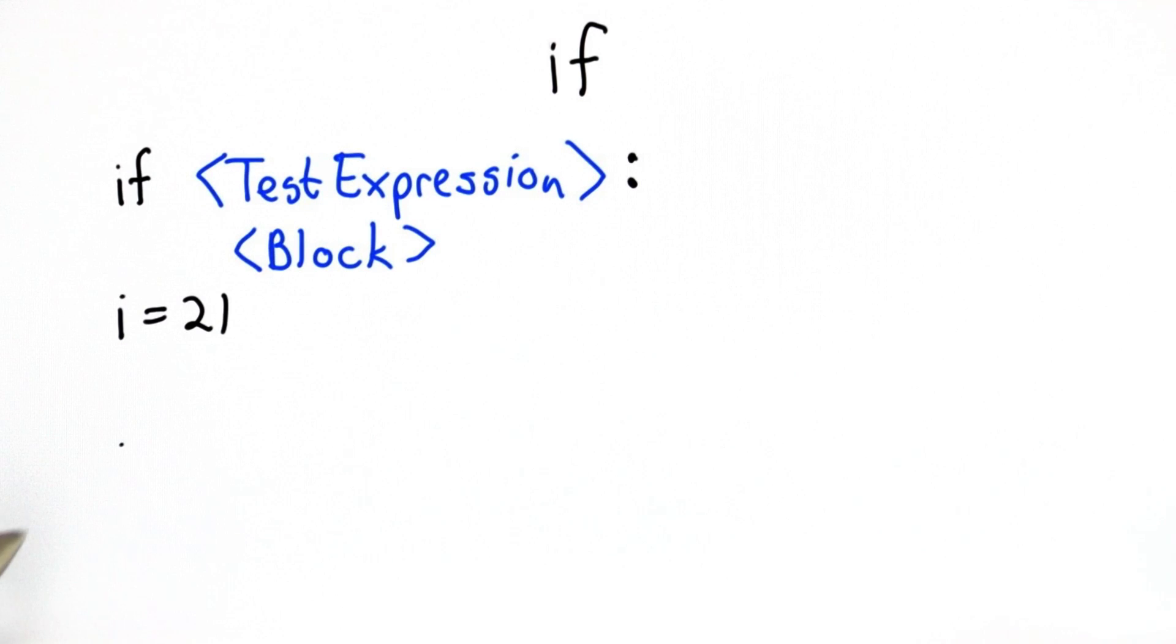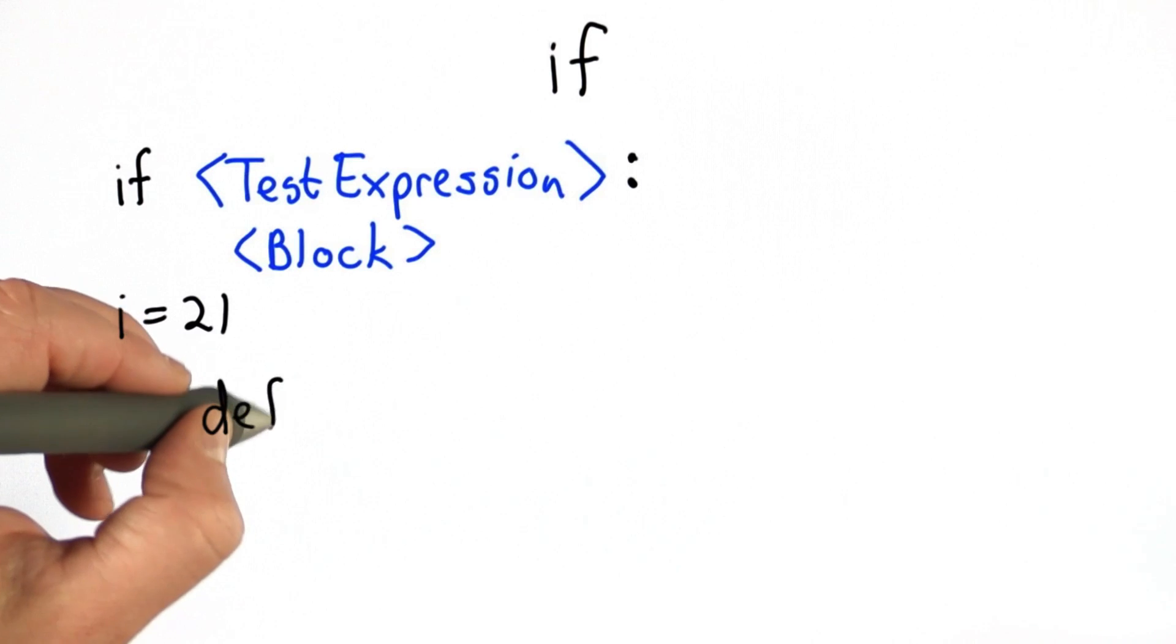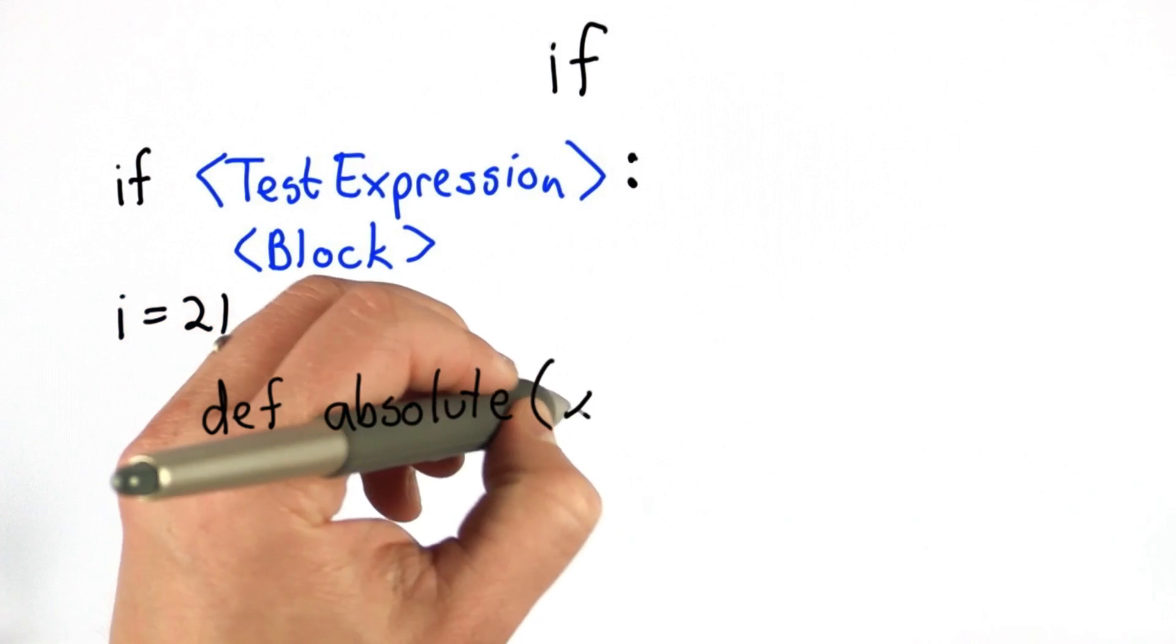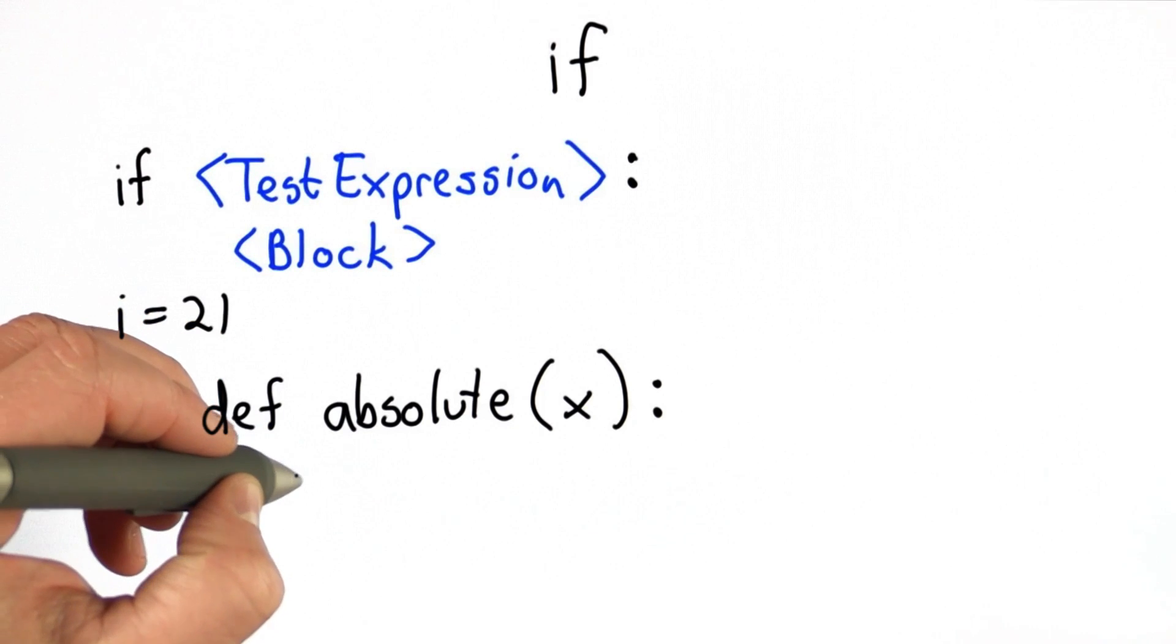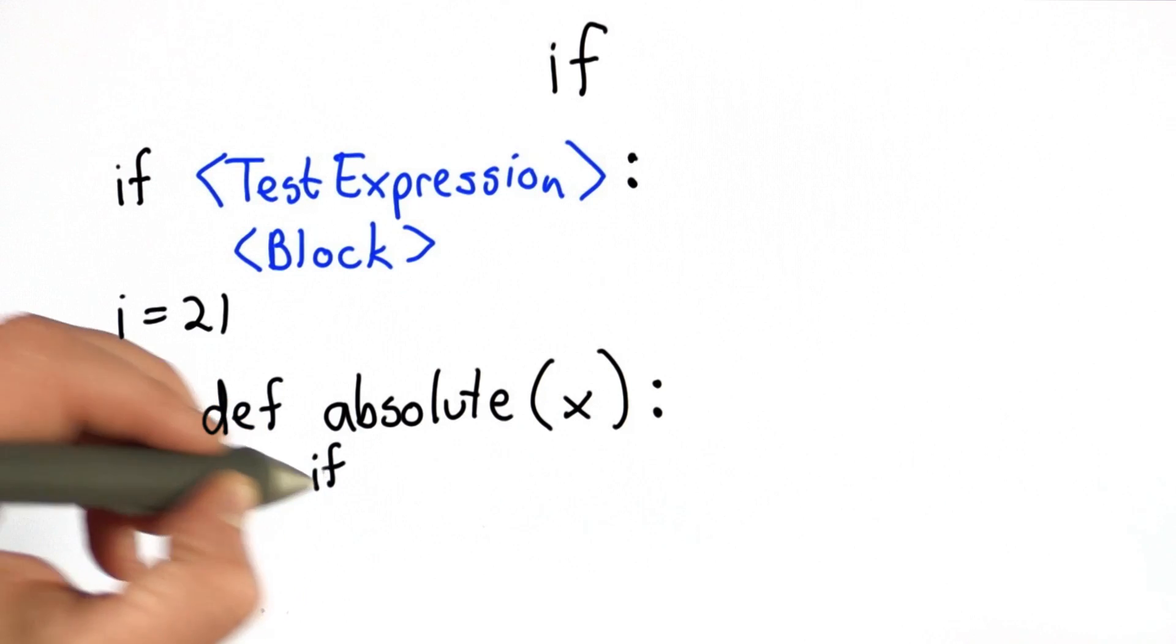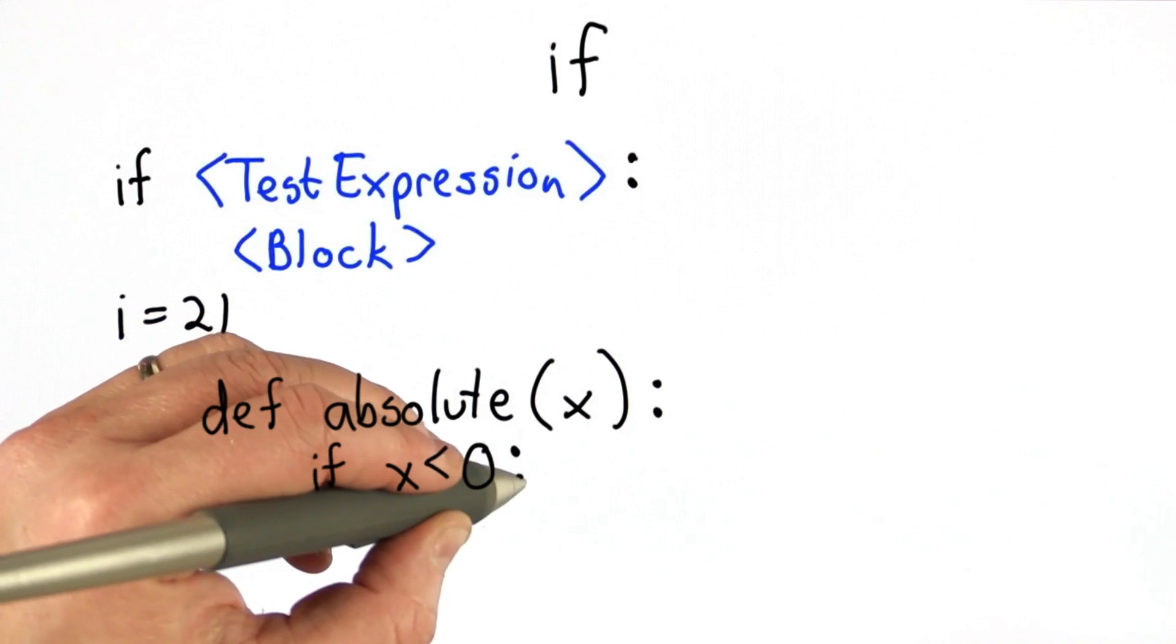So here's an example of a procedure that uses if. We can define a procedure absolute. It takes one input, which is a number. Inside the body of absolute, we're going to use an if statement. We'll use an if test, where we're testing if the value of x is less than 0. So that's the test expression.